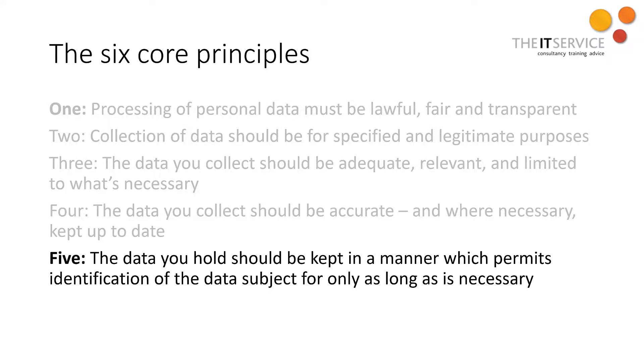The fifth principle says that the data you hold should be kept in a manner which permits identification of the data subject only for as long as is necessary. In other words, don't hold data for longer than you need it. If I apply for a job with you, your HR team can hold my data, maybe for six months, in case I bring a lawsuit for discrimination. But for monitoring recruitment bias, you don't need to keep my personal details — you can anonymize that data and just keep the statistics.